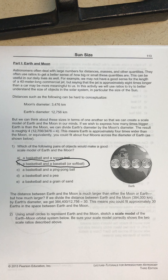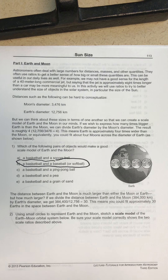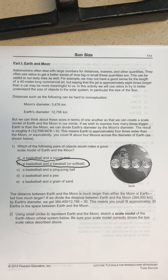The distance between Earth and the Moon is much larger than either the Moon or Earth — but how much larger? If we divide the distance between Earth and the Moon, 384,400 kilometers, by Earth's diameter of 12,756 kilometers, we get about 30. This means that you could fit approximately 30 Earths in the space between the Earth and the Moon. Using small circles to represent the Earth and the Moon, sketch a scale model of the Earth-Moon orbital system that correctly shows both scale ratios.